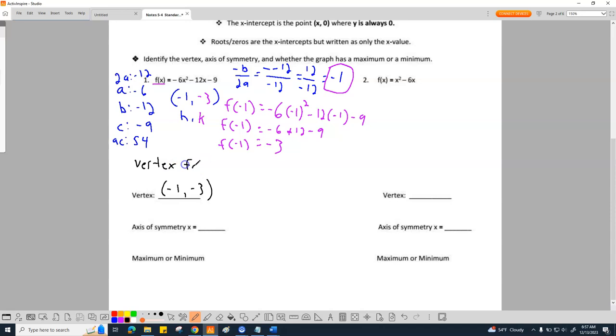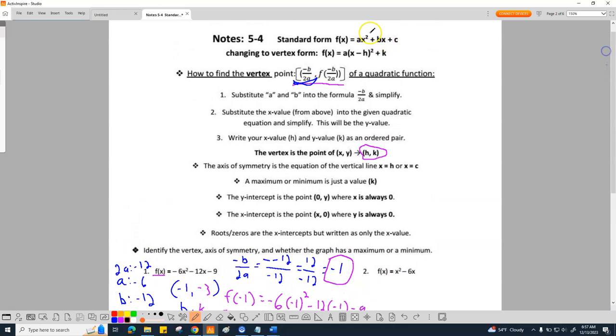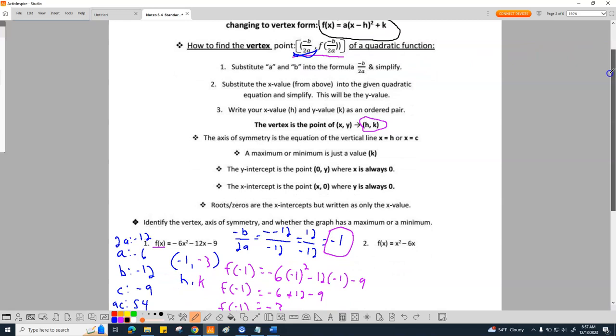So now that we have our vertex form, we basically, remember, the vertex form is that thing that is this equation up here at the top. It's this one. It's this one right here. This is the vertex form we're looking for. So you can see we need an A, an H, and a K, which we have all three of those. So here we go.